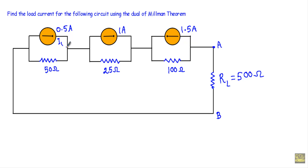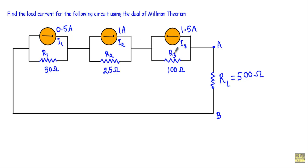...current I1, the resistance of 50 ohm as R1 — they are connected in parallel. This 1 ampere current source as I2, this resistor as R2 — I2 and R2 are connected in parallel. This 1.5 ampere current source as I3, this 100 ohm resistor as R3 — I3 and R3 are connected in parallel. These parallel combinations of current source and resistors are connected in series, so I can apply the dual of Millman's theorem.